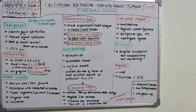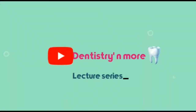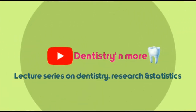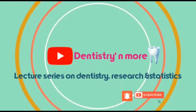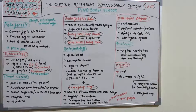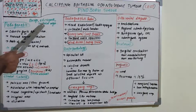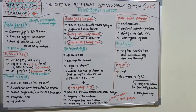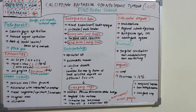CEOT — Calcifying Epithelial Odontogenic Tumor — or Pindborg tumor, is benign in nature, epithelial in origin, and odontogenic. Odontogenic means it is derived from specialized dental tissue. Pindborg tumors are locally invasive epithelial odontogenic neoplasms characterized by the presence of amyloid material that may become calcified.